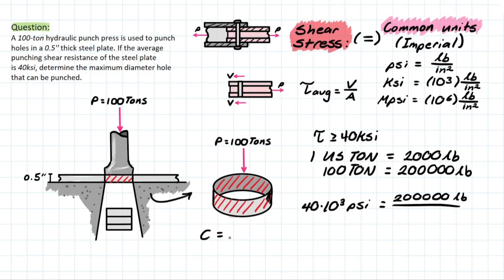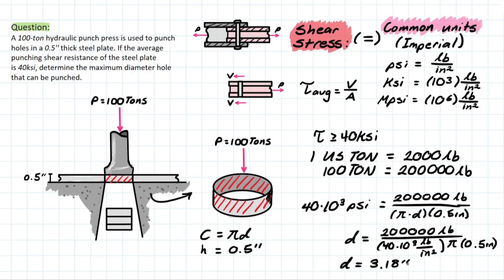So, we know that circumference for a circle is going to be pi times D. And we know that the height of our plate is 0.5 inches. So, plugging this in, we're going to have pi times D multiplied by 0.5 inches. And then we can isolate for D, which will leave us with 200,000 pounds over 40 times 10 to the 3 pounds per square inch, multiply by pi, which is constant, and then we have the 0.5 inch over here as well. And your units will cancel to leave you with just inches. And the answer will be 3.18 for that max diameter.